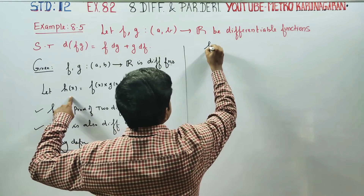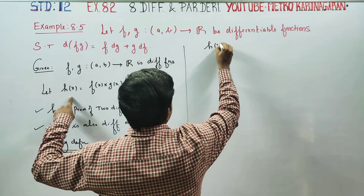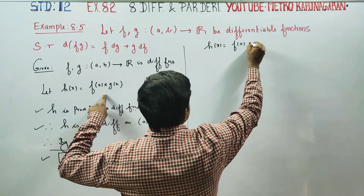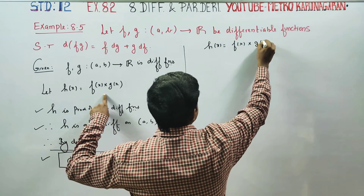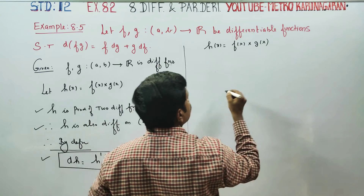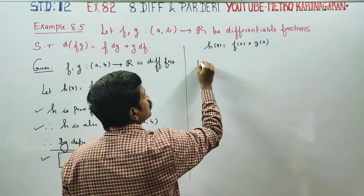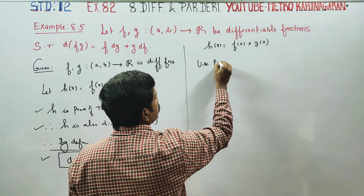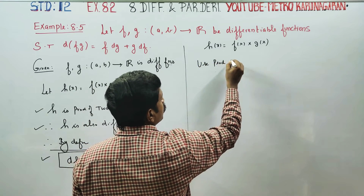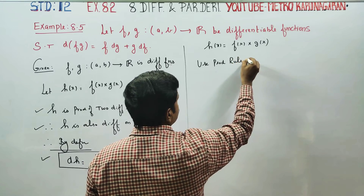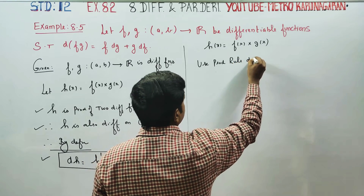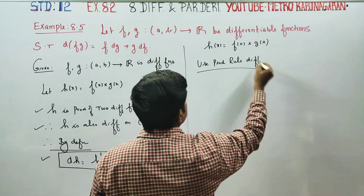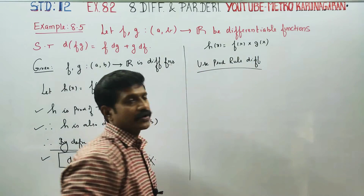H(x) is equal to f(x) into g(x). Use the product rule and differentiate. I am going to differentiate this using the product rule.